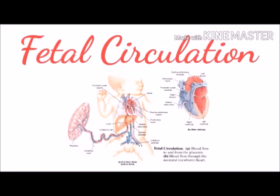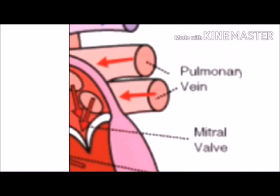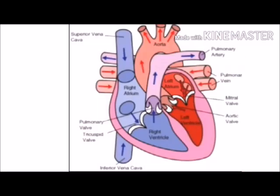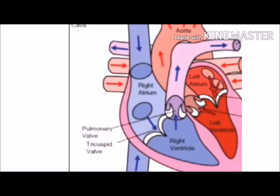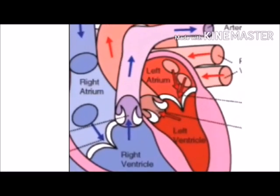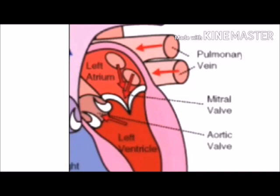Before dealing with fetal circulation, we will revise the circulation after birth. We have the right atrium, right ventricle, left atrium, left ventricle, pulmonary veins, pulmonary artery, and aorta. From the inferior vena cava and superior vena cava, deoxygenated blood is collected from all parts of the body and enters into the right atrium. Through the tricuspid valve it enters into the right ventricle, which is filled with deoxygenated blood.